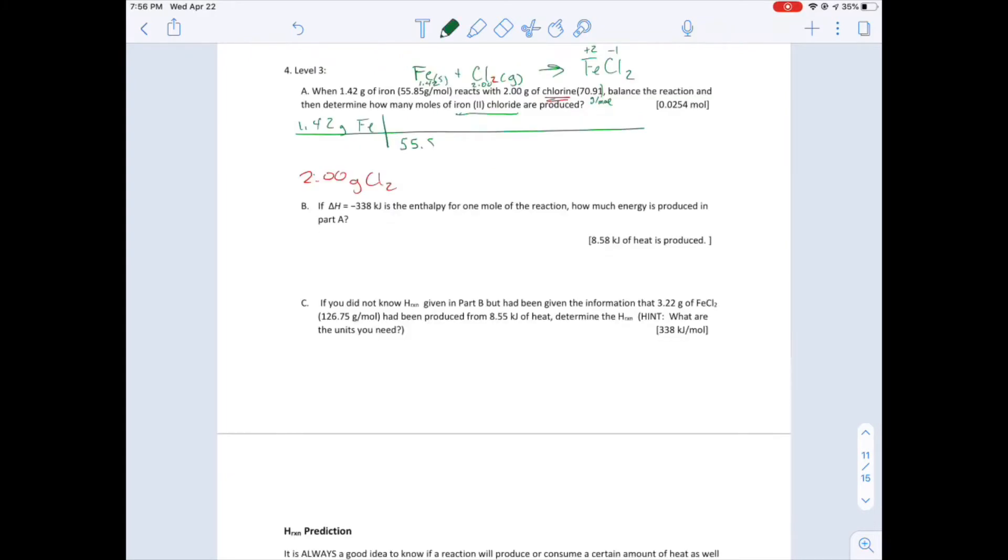55.85 grams in one mole, and this is iron. Then we're going from moles of iron to moles of iron chloride. So when we look at that reaction, it is balanced. So this is one to one.